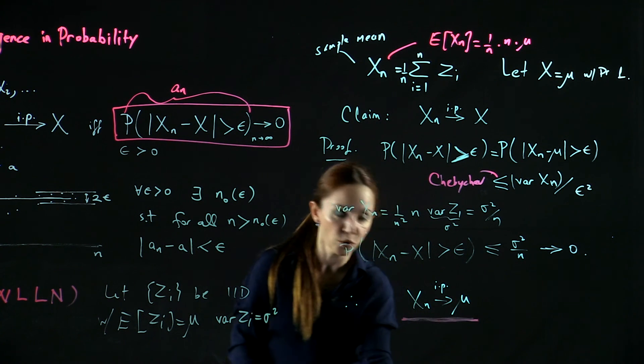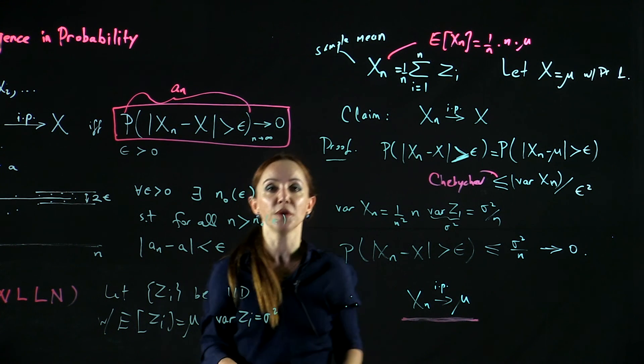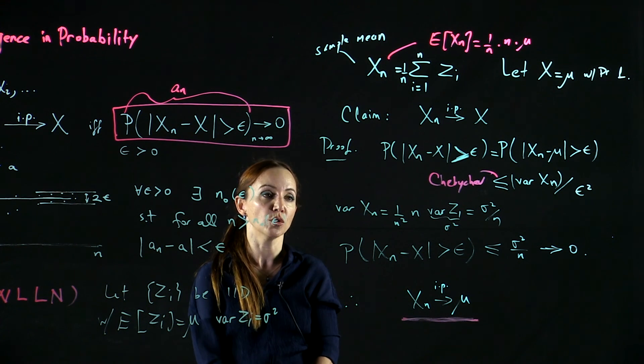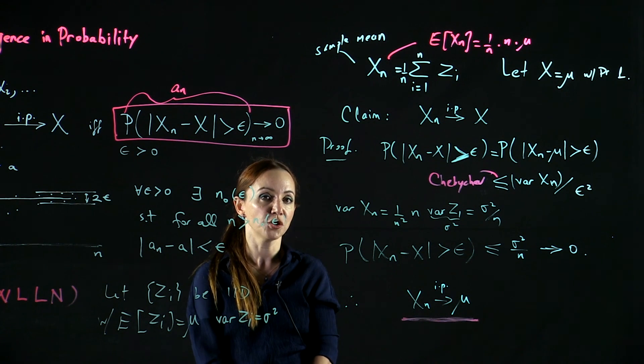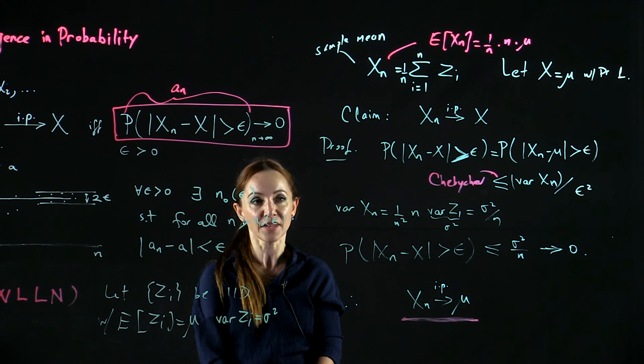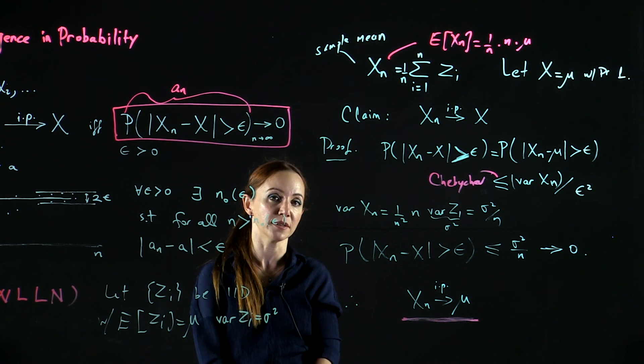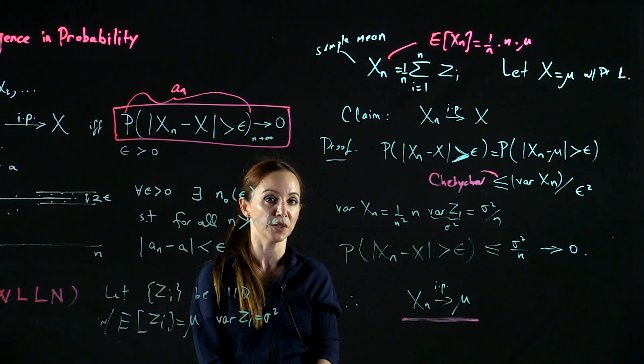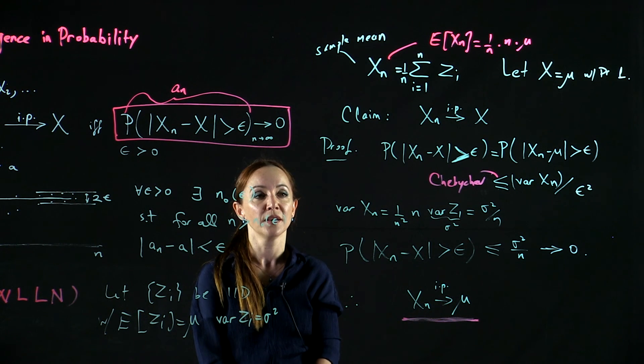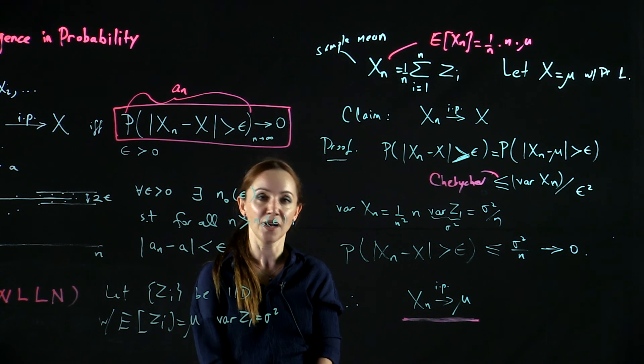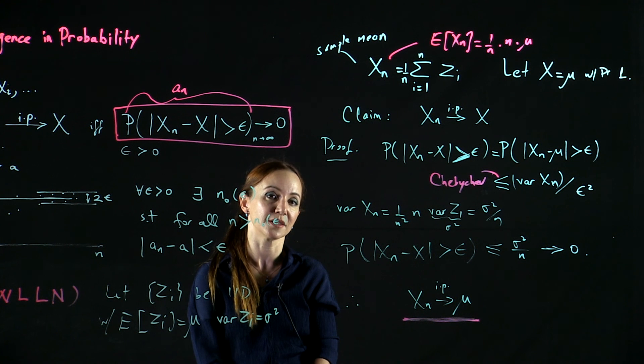And this is the weak law of large numbers that we use oftentimes in engineering models when we average, when we take averages of independent measurements and in daily life as well, whenever we take statistical averages.